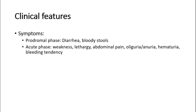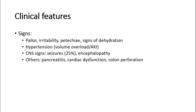In the acute phase — seven to ten days after — the child may present with weakness, lethargy, abdominal pain, signs of acute kidney injury such as oliguria or anuria where there is reduced urine output, hematuria where there is blood in the urine, or bleeding tendency due to thrombocytopenia. Signs that may be identified include pallor due to hemolytic anemia, irritability, petechiae due to thrombocytopenia, and signs of dehydration which could be due to the diarrhea.